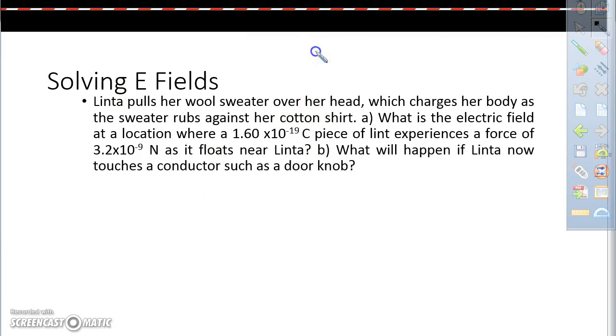All right, so let's solve the first way using the electric field as E equals FE over Q. So this is really useful if you have these pieces of information already, like the amount of charge and the push. So let's draw a diagram of this kind of situation right here. The question is, what is, you know, Linta? Get it? Linta with the wool. Linta pulls her wool sweater over head, which charges her body as the sweater rubs against her cotton shirt. What is the electric field at the location where a 1.6 times 10 to the negative 19 coulomb piece of lint experiences a force of 3.2 times 10 to the negative 9 newtons as it floats near her? What will happen if she touches the door knob?